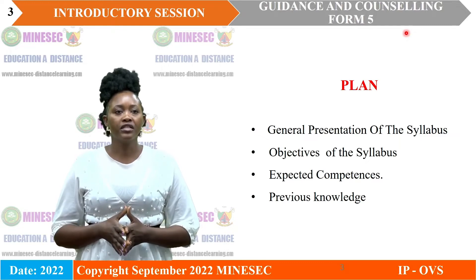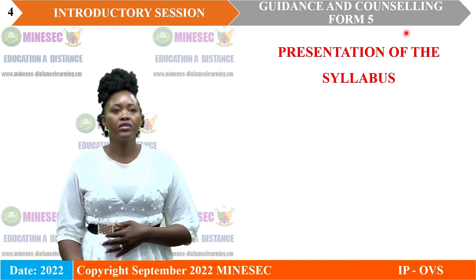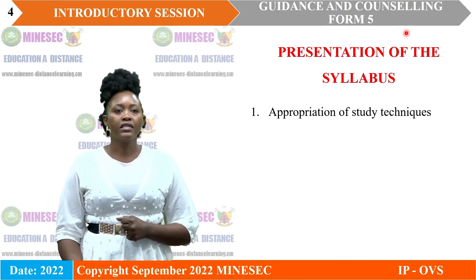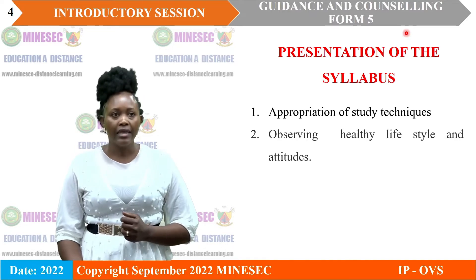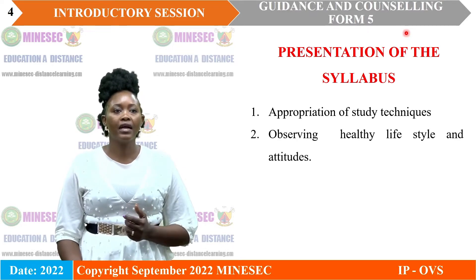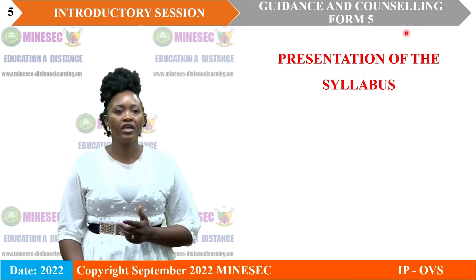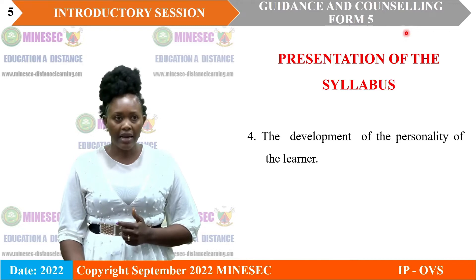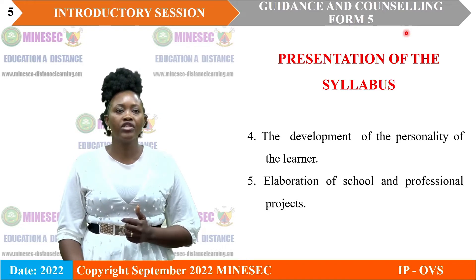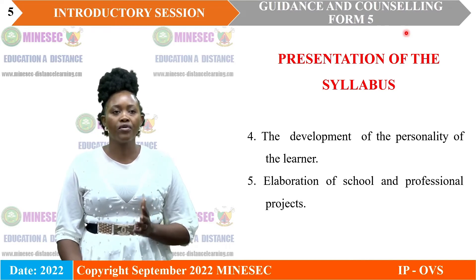We have the presentation, objectives of the syllabus, expected competencies, and previous knowledge. The syllabus for Form 5 has five broad topics: appropriation of study techniques; observing healthy lifestyle and attitudes; use of different information and communication channels; development of the personality of the learner; and elaboration of the school and professional projects.